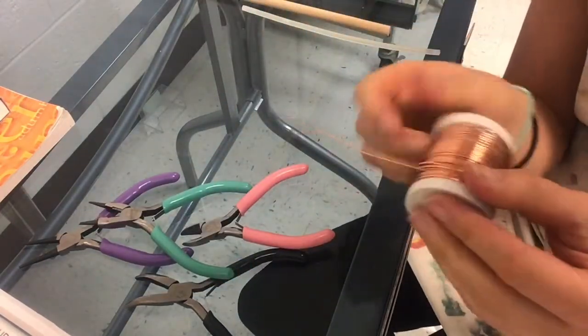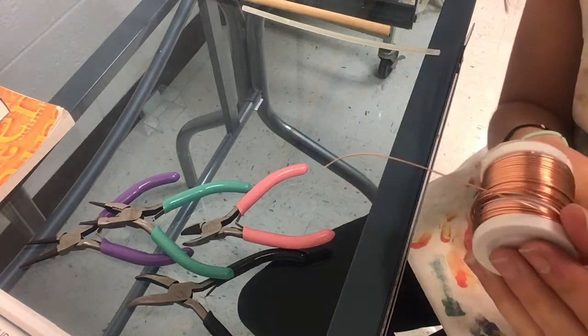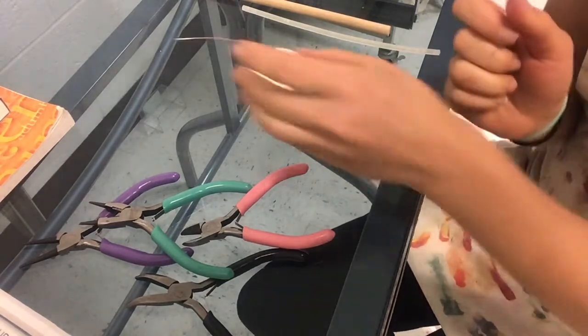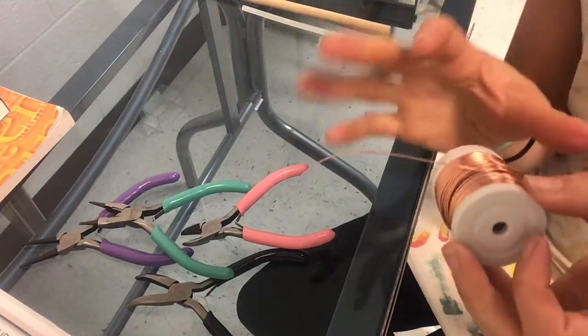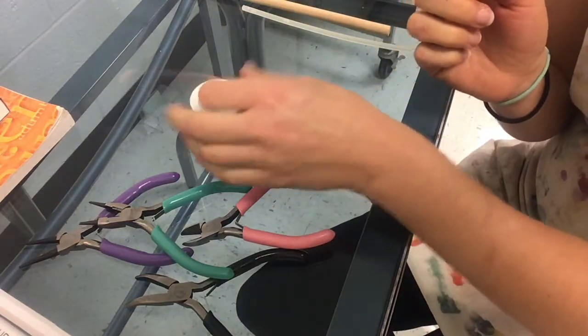We're going to be using 20 gauge wire. It doesn't matter if it's the copper wire, the silver or the gold, it's all the same. The gauge has to do with how thick or thin the wire is.